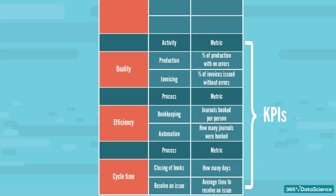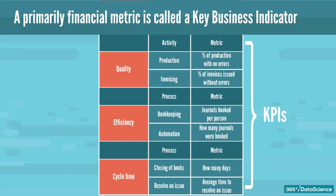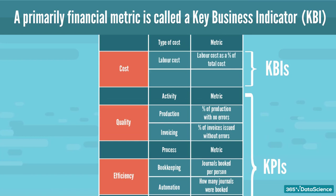When a metric is primarily financial in nature, we call this a key business indicator, or KBI. In the table on your screen, you can see examples of KBIs: labor cost as a percentage of spend, R&D as a percentage of revenues, etc.